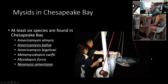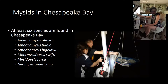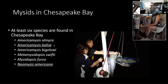After doing research in the Bay and reading through historical accounts, it seems there are at least six species that call Chesapeake Bay home: Americamysis almira, Americamysis bahia, Americamysis bigelowi, Metamysidopsis swiftii, Mysidopsis furca, and Neomysis americana. I personally do a lot of work with Americamysis bahia and Neomysis americana. Folks might be familiar with Americamysis bahia — it's used quite extensively by the EPA in their toxicology testing, so it's a really good toxicity study species.